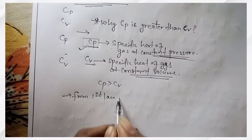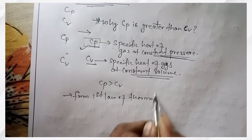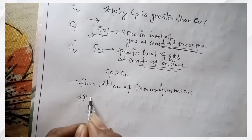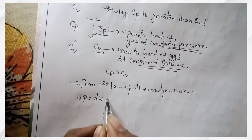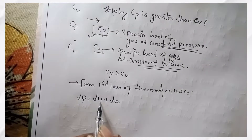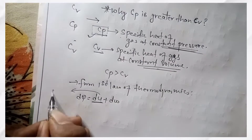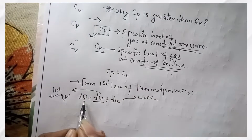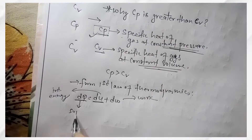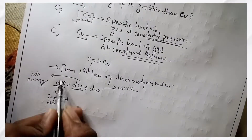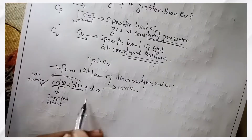The first law of thermodynamics states: dQ equals dU plus dW. Here, dU is called internal energy, dW is called work done, and dQ is called supplied heat.